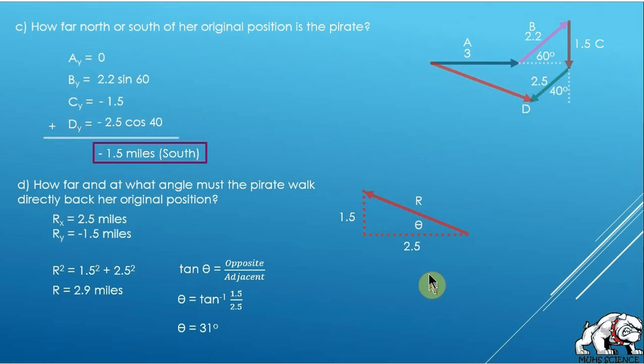So the angle is 31 degrees, so I know the basics of my answer here. My resultant is 2.9 miles, my angle is 31 degrees, and the last thing I have to do is put a reference in. And she is traveling north of west, and so that's how she has to walk back to her ship.